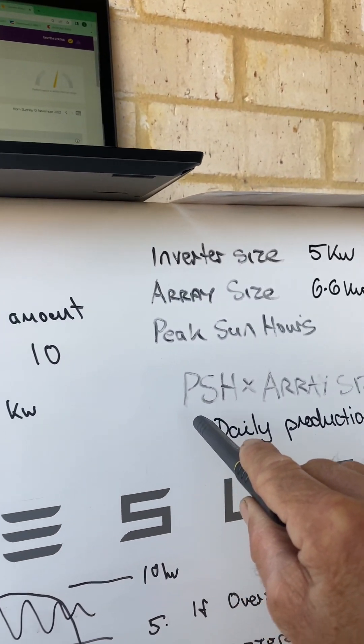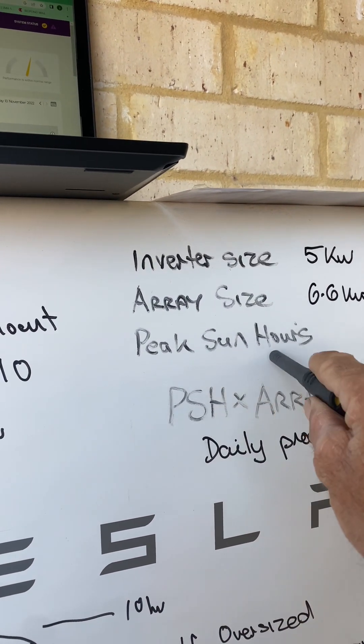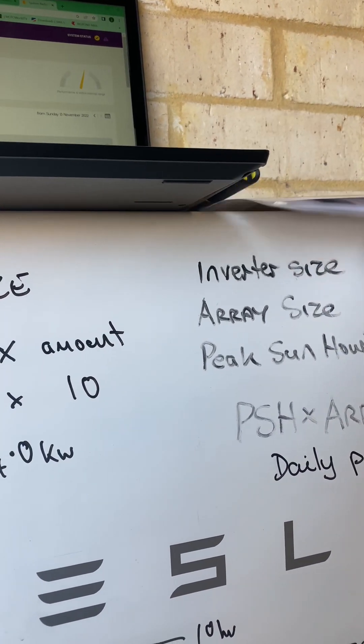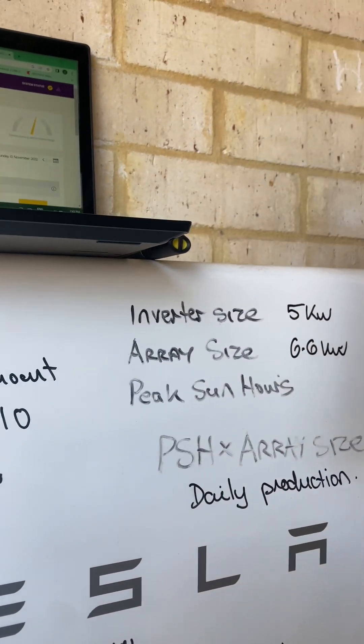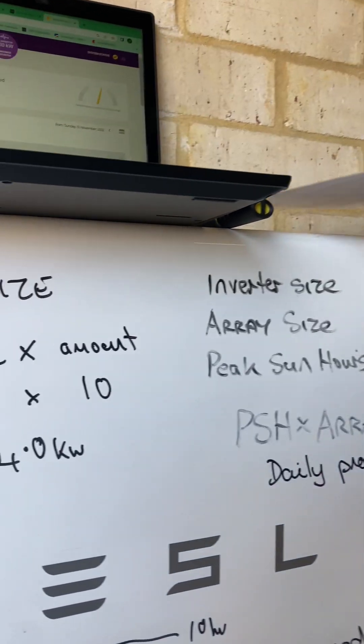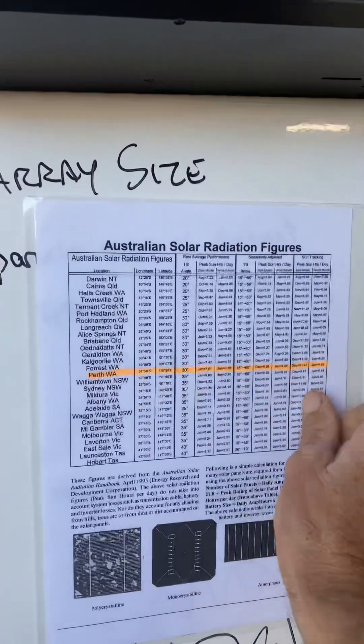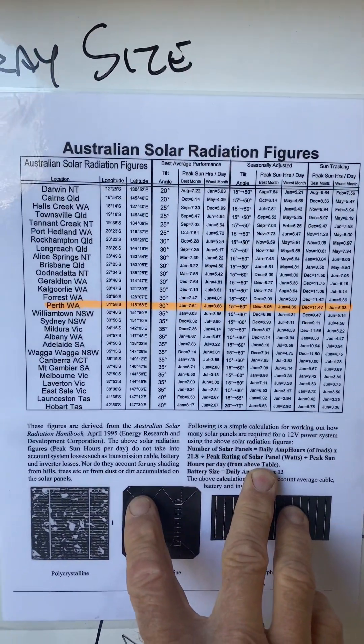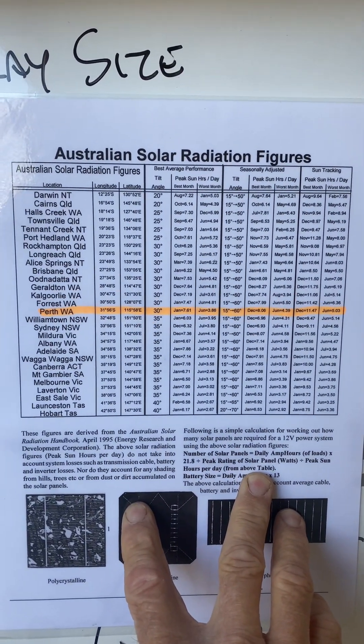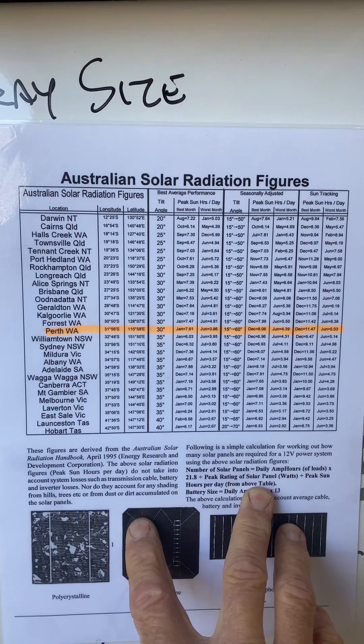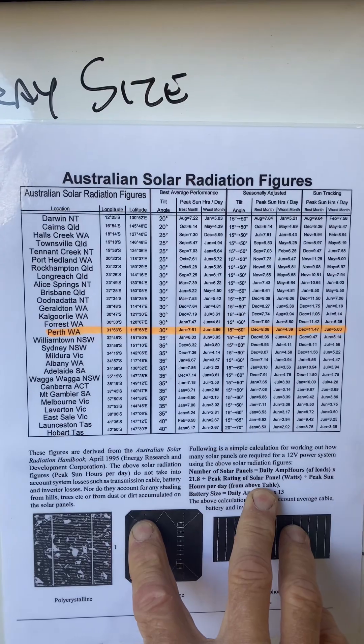The other thing we need to work out is your peak sun hours for where you live. Now you'll have to do an internet search to find that information, but if you live in Australia you're in luck because I'm going to show you right now. I'll hold that still so you can pause it and zoom in. Now we need the peak sun hours because what we're going to do is times that by the array size.